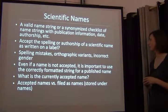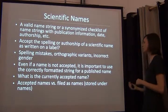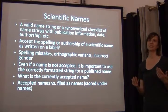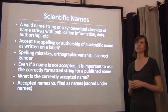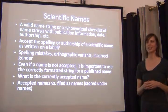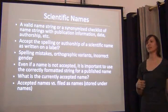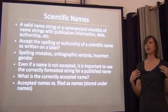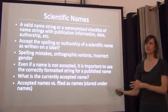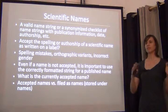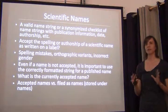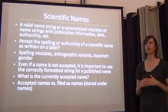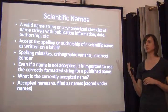Do you want to accept the spelling written on a label or an orthographic variant? Sometimes it's just incorrect gender. But even if a name is not accepted, it's still important to use the correctly formatted string of any published name. For example, we recently went through the grasses and asters and tried to curate them in advance of a major digitization project — transferring huge aisles of specimens to the correct valid names. We got so far into Asteraceae that we had to stop, so we're mapping them to an accepted name using the database rather than what's on the specimen.